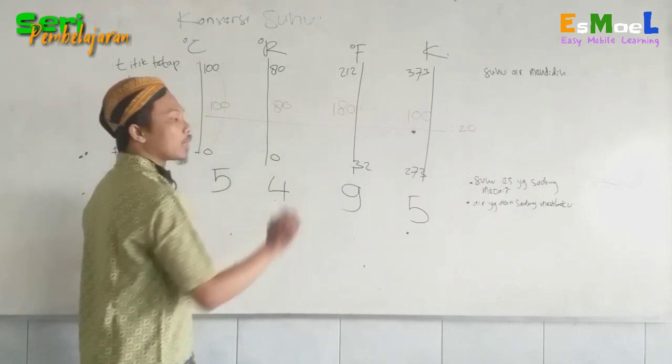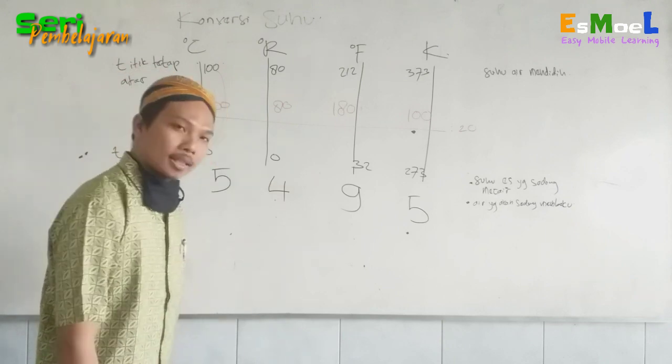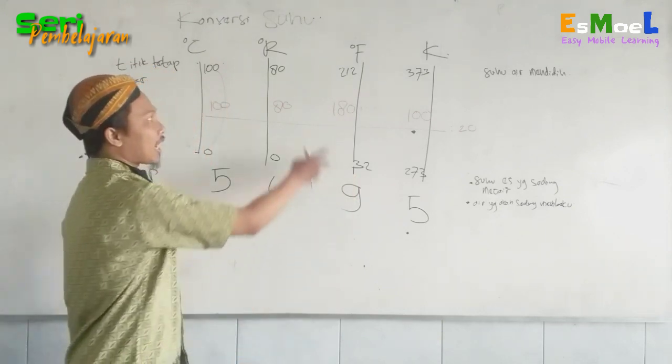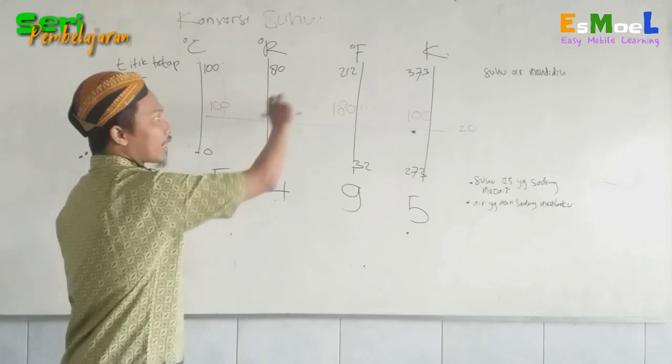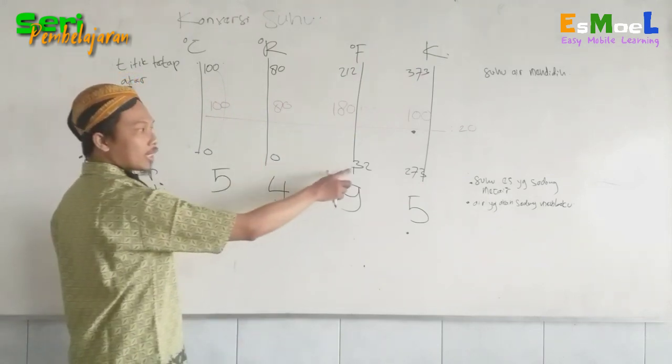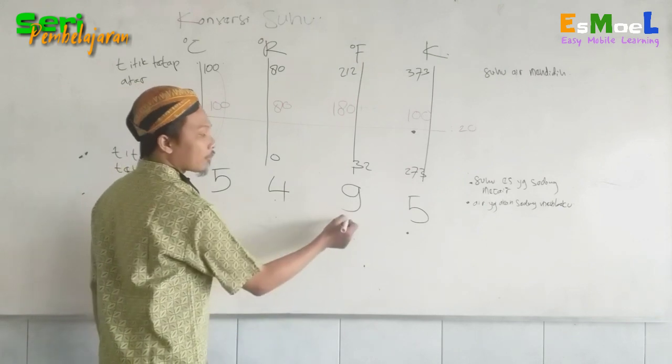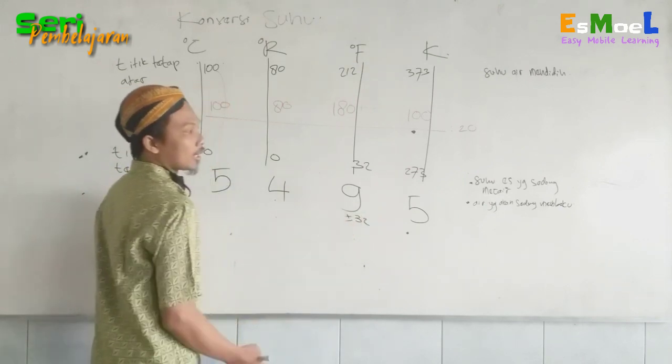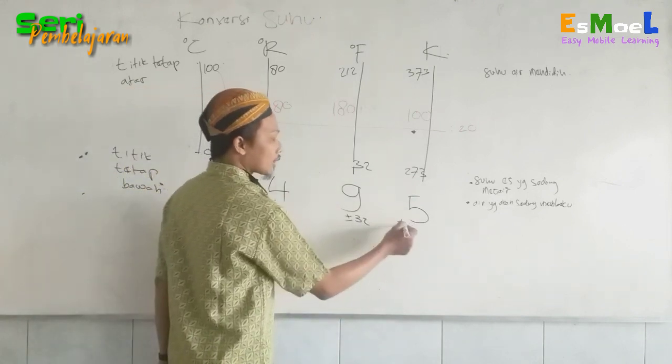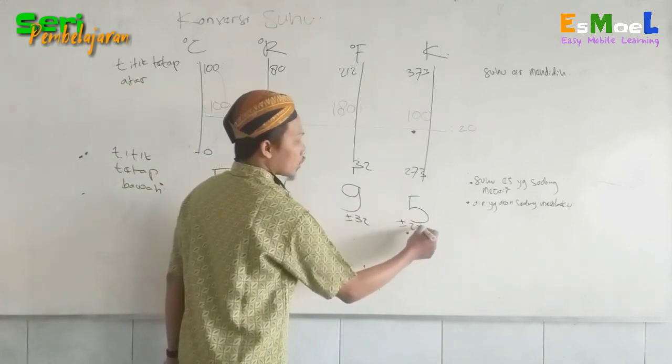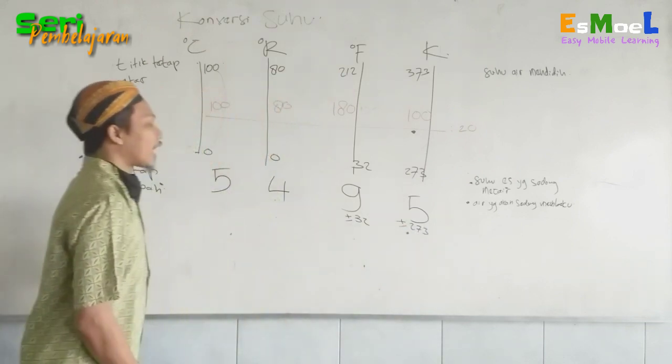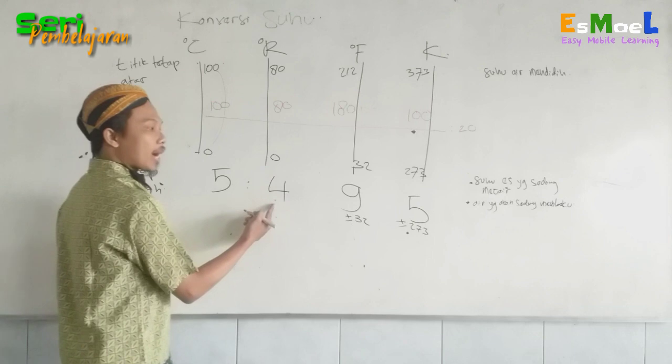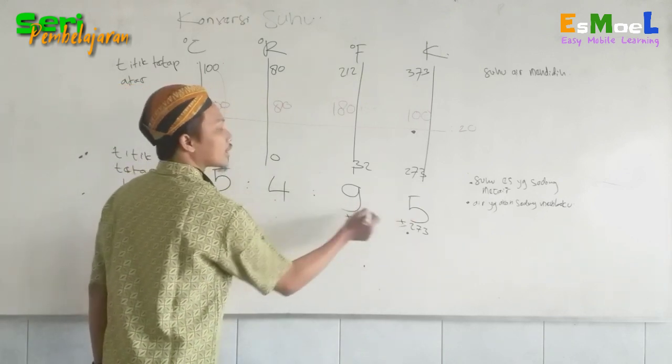Ingat, di sini mulai 0, 0. Sedangkan di sini ada 32. Saat menuju ke Fahrenheit, nanti terakhir ditambah 32. Tapi dari skala yang lain, dari Fahrenheitnya ke skala yang lain, ini dikurangi dulu 32. Makanya di sini ada plus minus 32. Sedangkan ini sama, plus minus 273. Akhirnya ketemu perbandingan angka 5, 4, 9, 5.